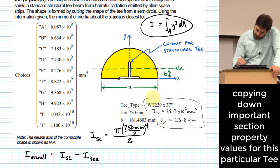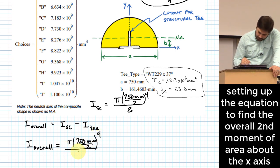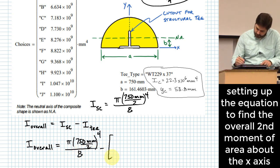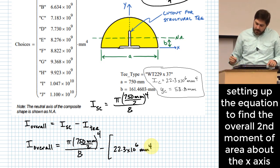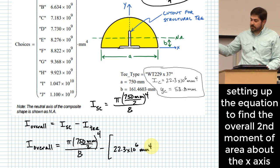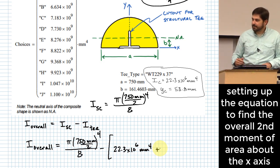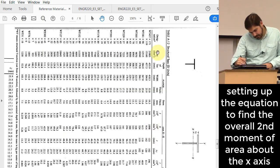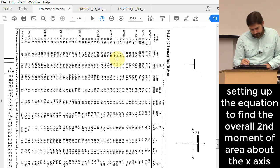So this is all information we can get from the table for WT229 by 37, and the way we use it is down here to find this overall i with the t cutout. I'm going to take this pi times 750 millimeters over 2 to the fourth over 8 and subtract off 22.3 times 10 to the sixth millimeters to the fourth. But then to figure out what the second moment of area is for that t around that top edge, I need to add to this the area. And actually, I should have grabbed that while I was there on the table too. Where do I get the area? Right here. So WT229 by 37, it says here the area is 4730 millimeters squared.